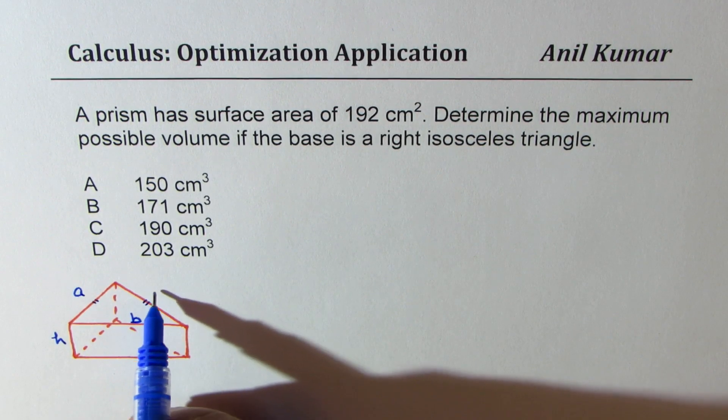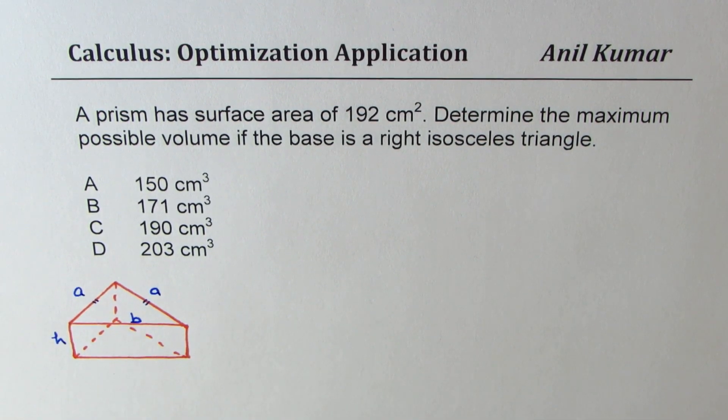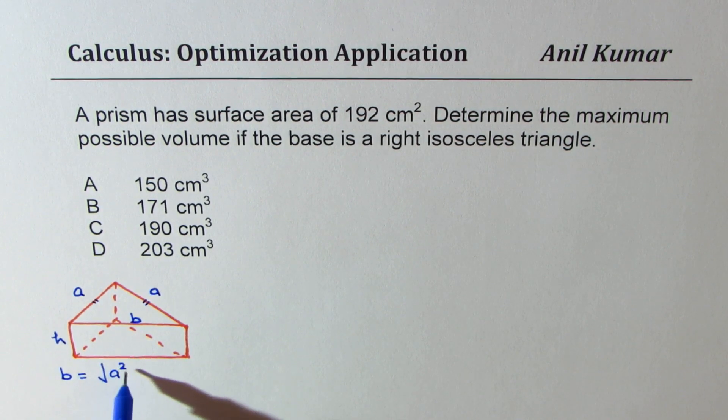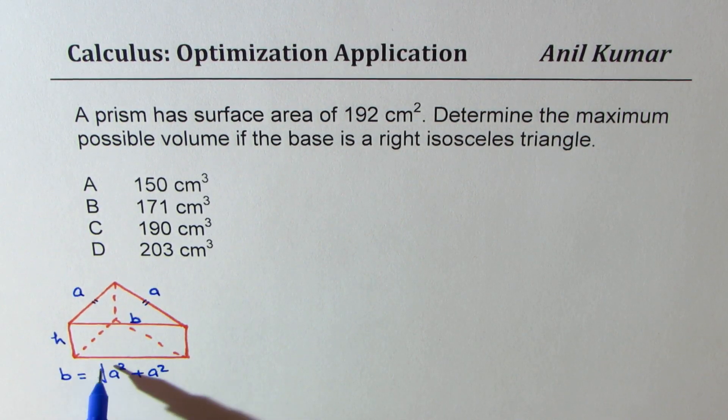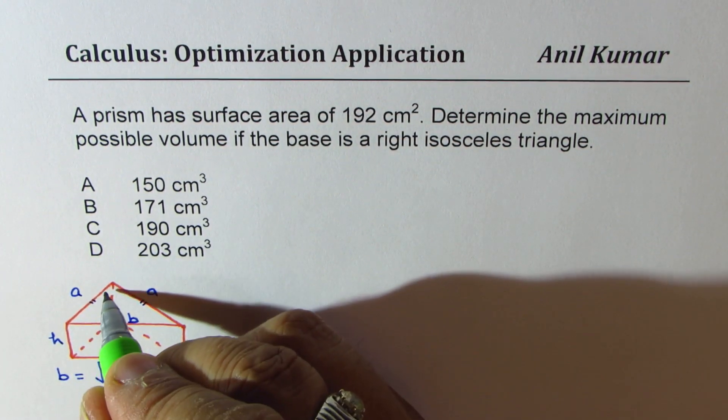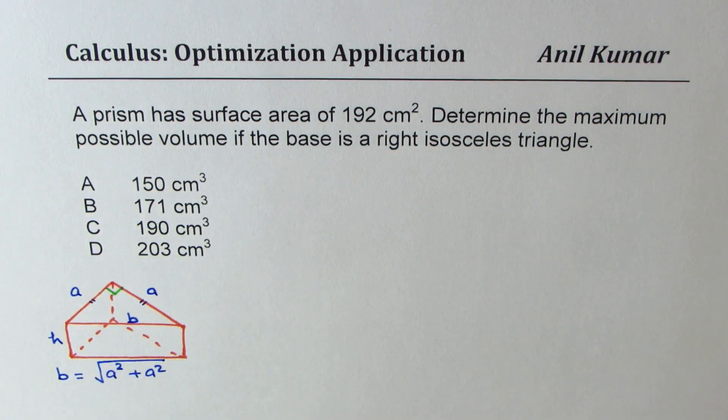Now from Pythagorean theorem we can find what b is. b is equal to square root of a square plus a square since the triangle is right isosceles. That means we have a right angle right there.